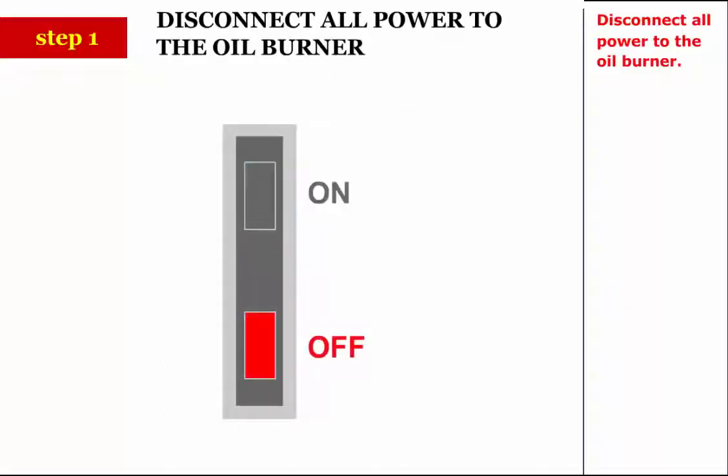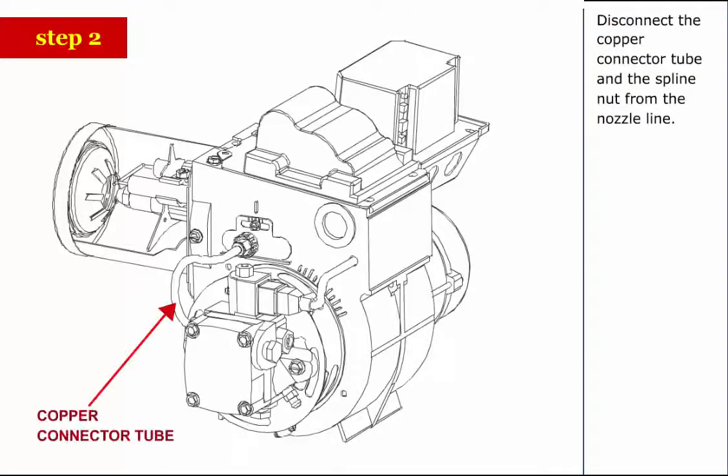Step 1: Disconnect all power to the oil burner. Step 2: Disconnect the copper connector tube and the spline nut from the nozzle line.